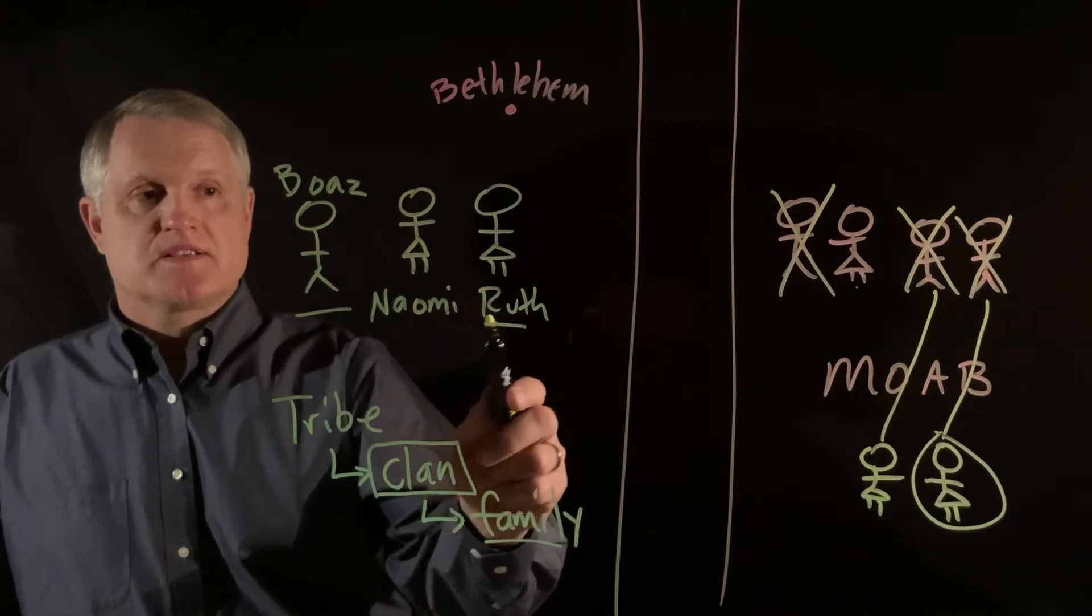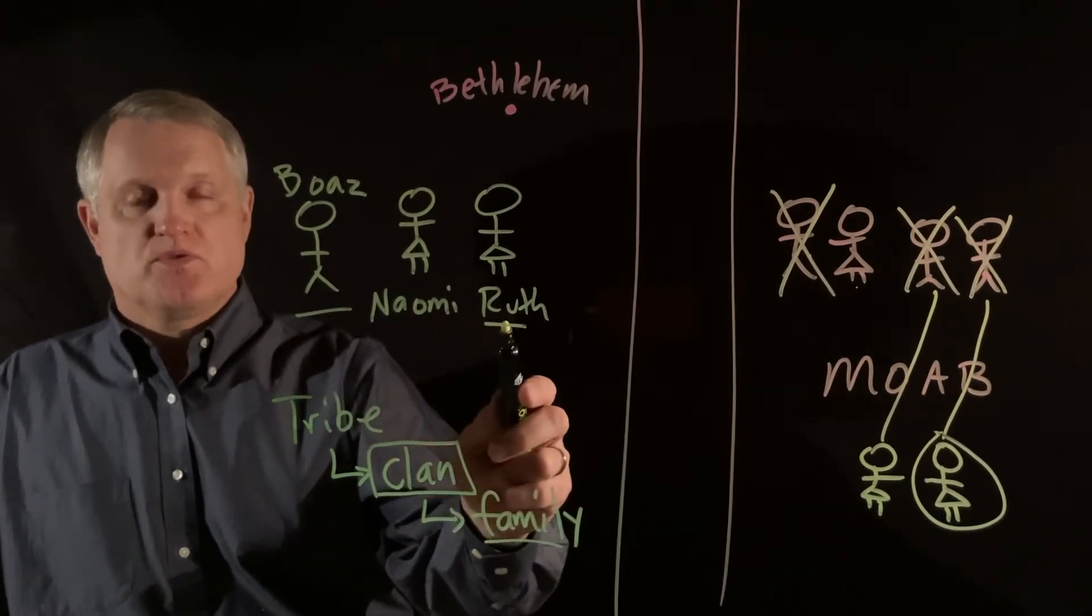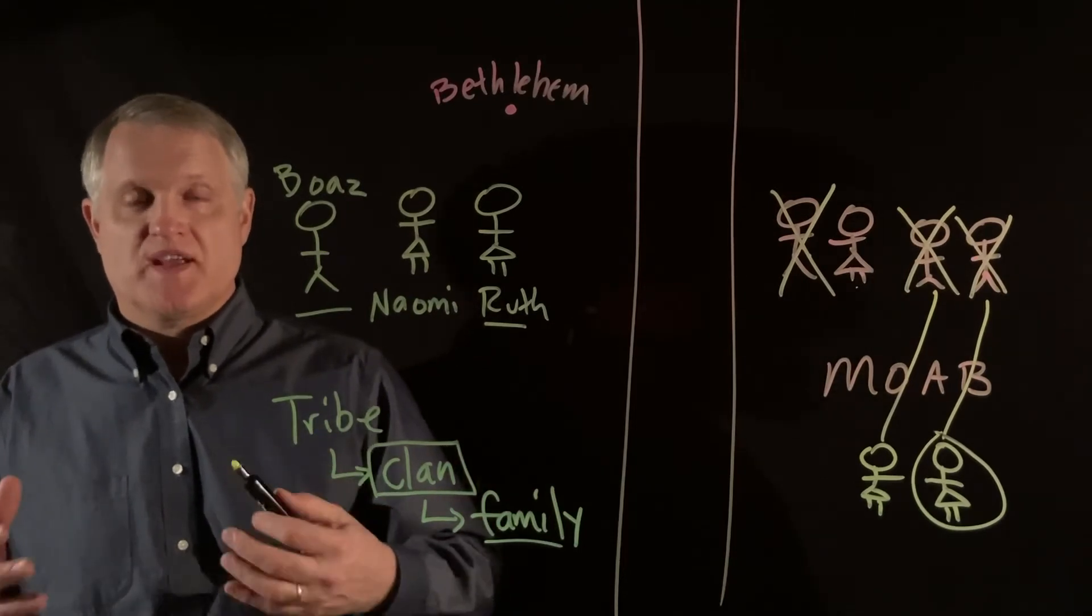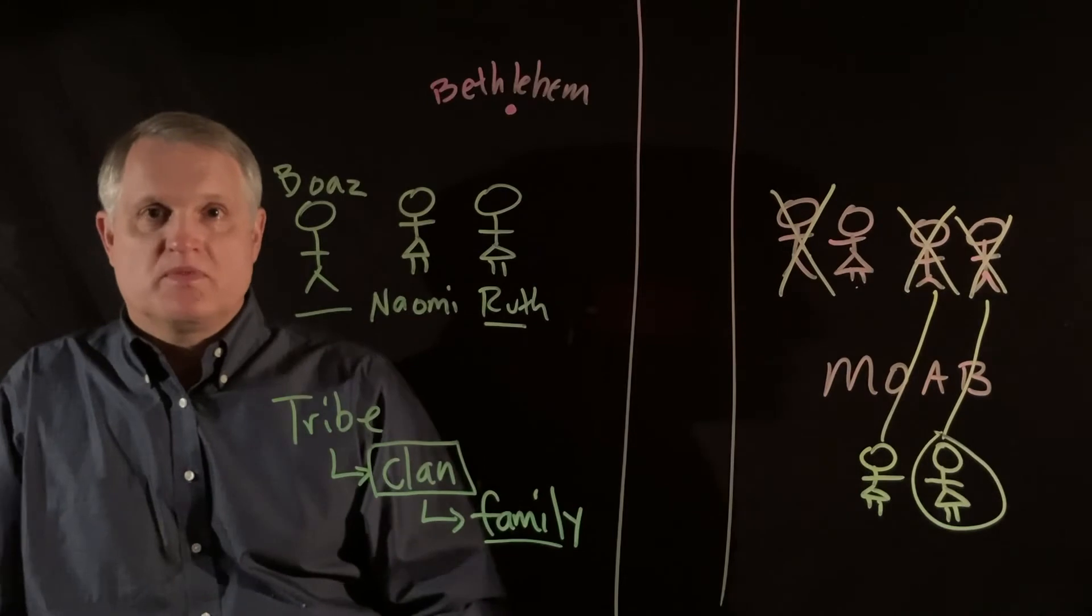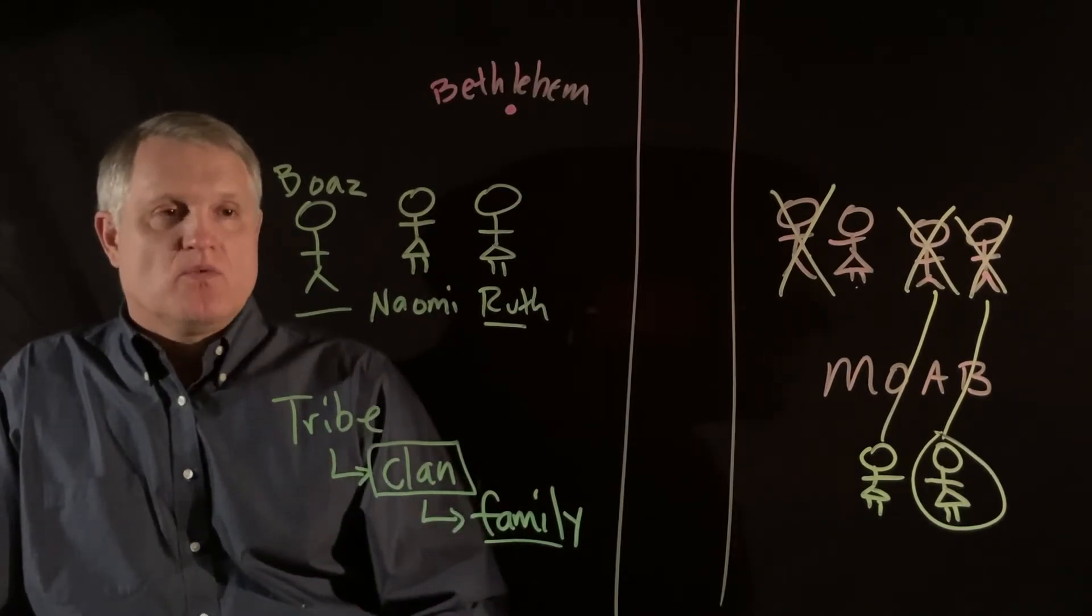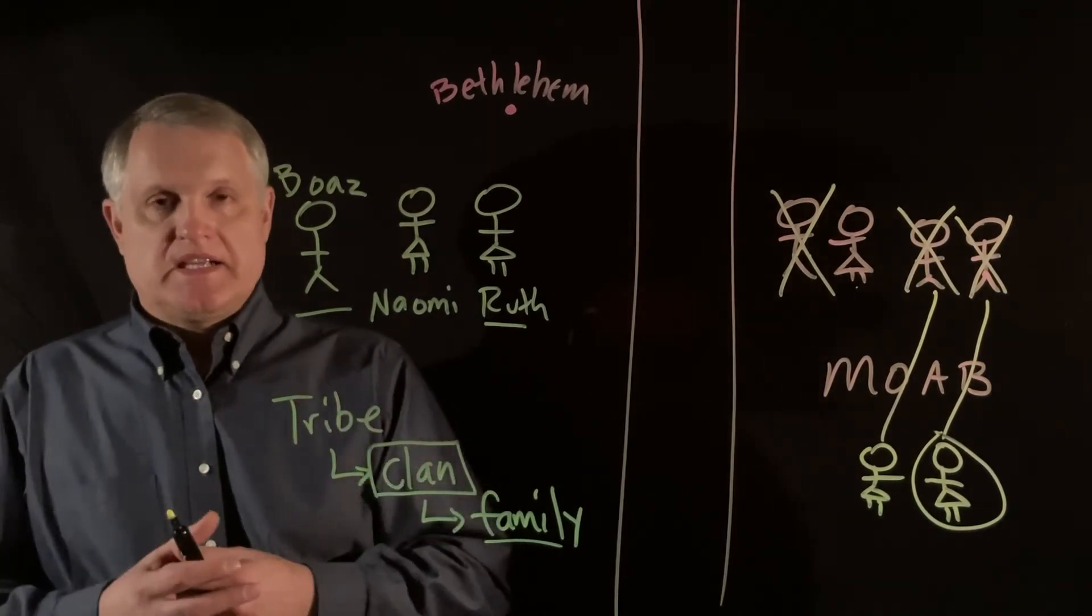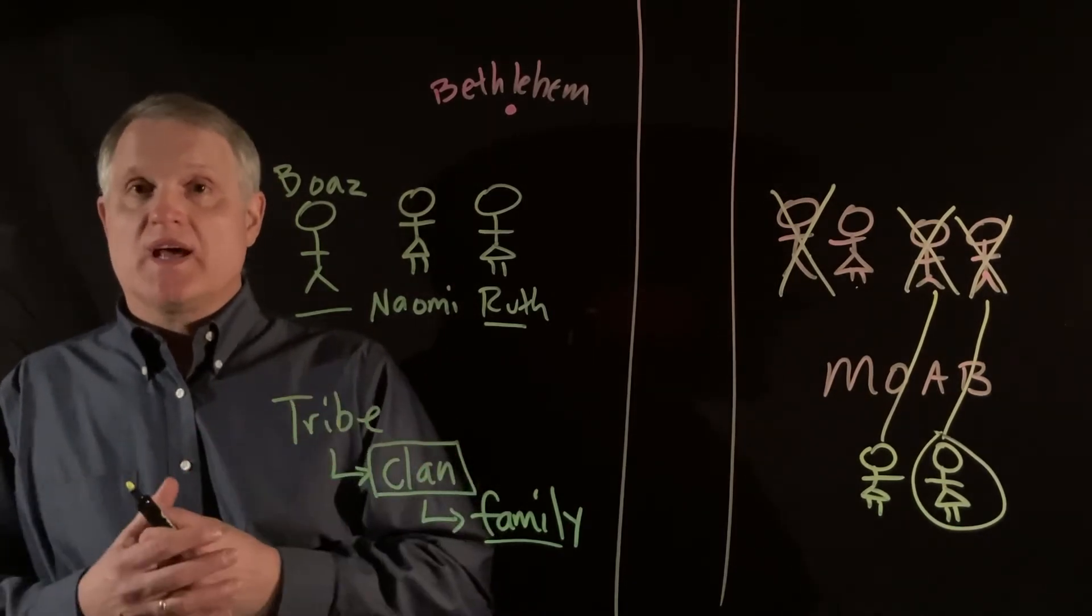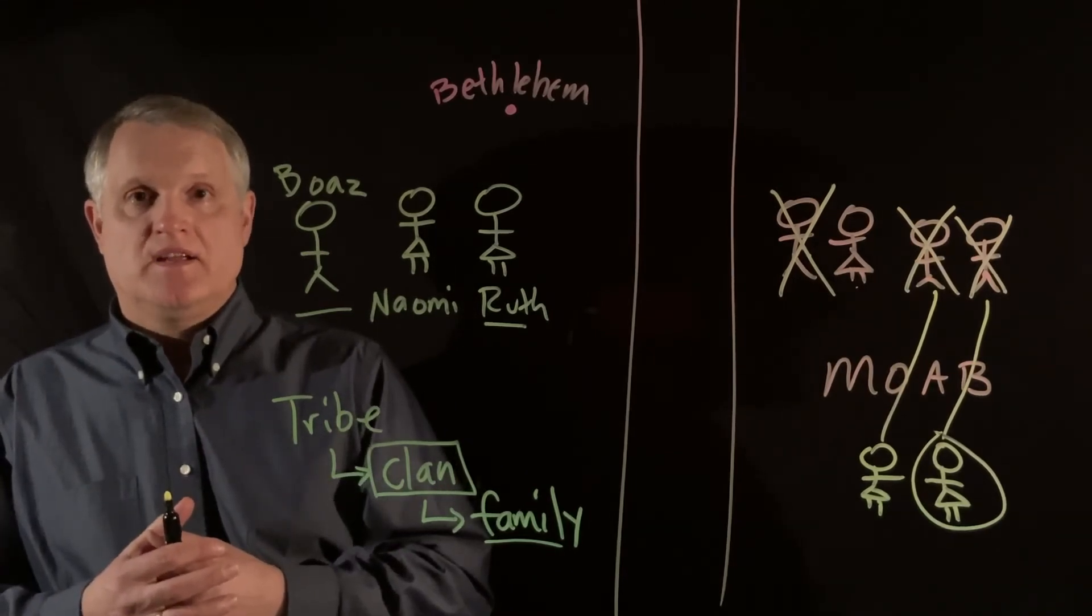Naomi recognizes a possible love story here. So she arranges for Ruth to propose, as it were, the idea of marriage to Boaz on the village threshing room floor one evening. It's an above-the-board kind of idea. And Boaz realizes that Ruth wants marriage. He's honored by that, and he goes to arrange it.